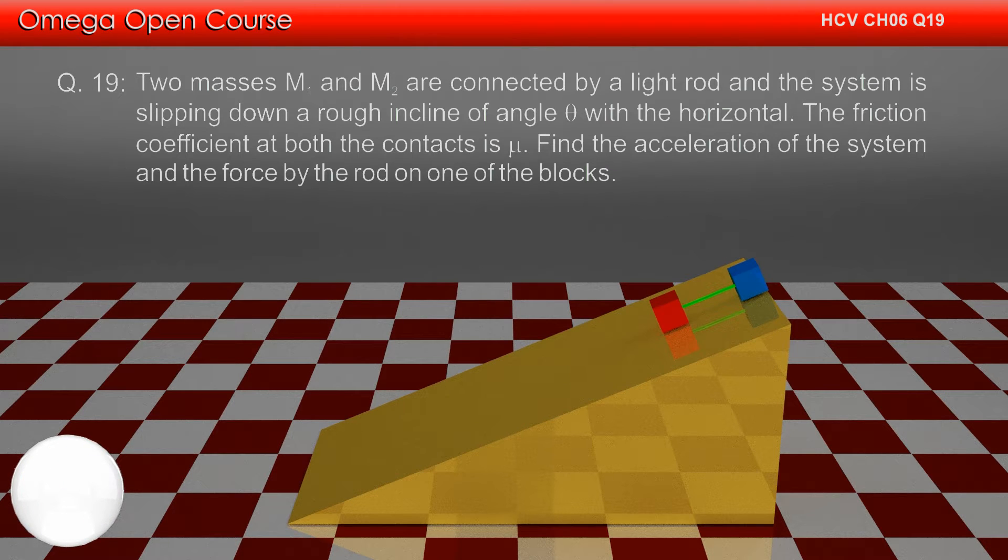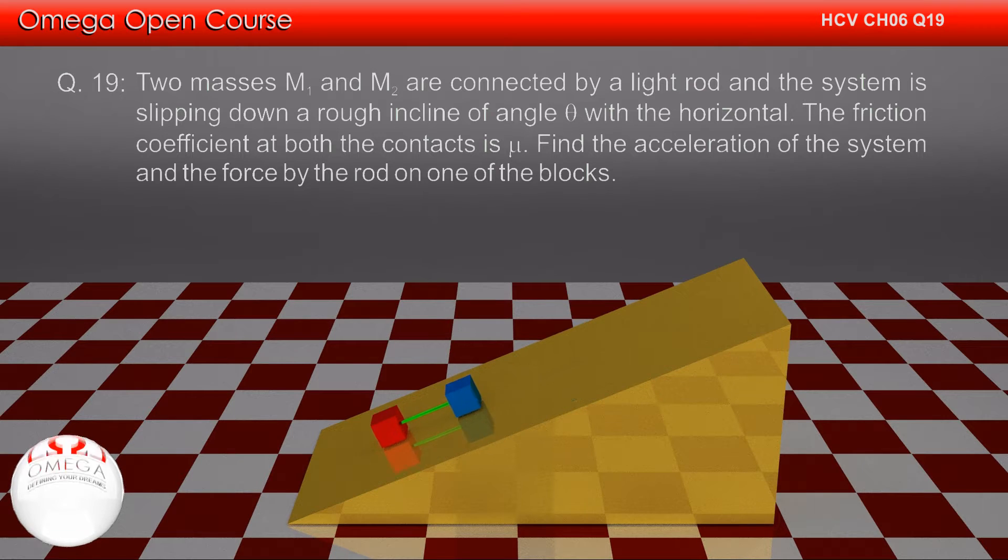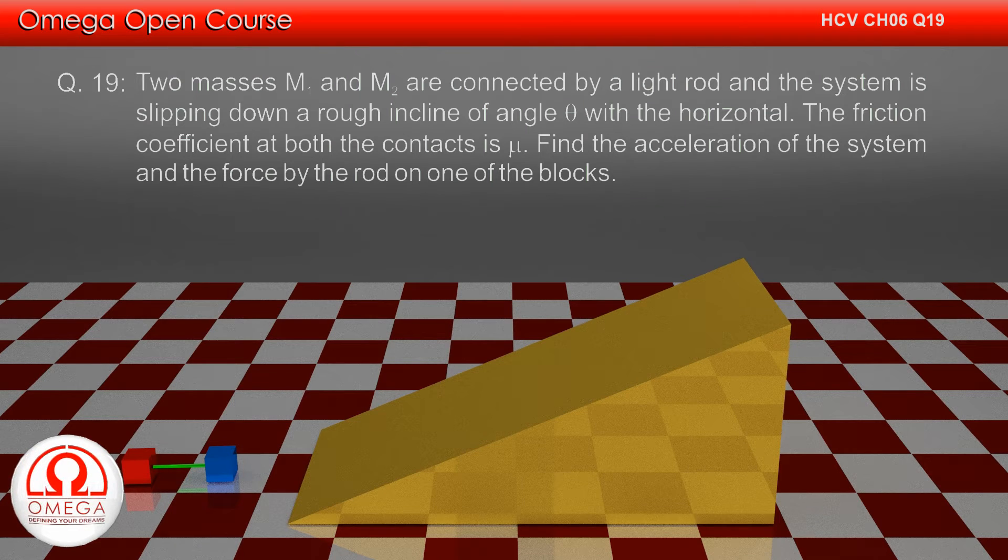Two masses M1 and M2 are connected by a light rod and the system is slipping down a rough incline of angle theta with the horizontal. The friction coefficient at both the contacts is mu. Find the acceleration of the system and the force by the rod on one of the blocks.